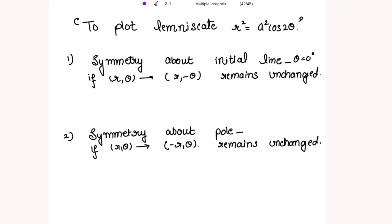To understand how to plot the lemniscate r² = a² cos(2θ), we need to understand a few points about symmetry. First is symmetry about the initial line, i.e., θ = 0°. If I replace (r, θ) with (r, −θ) and the result remains unchanged, then there is symmetry about the initial line.